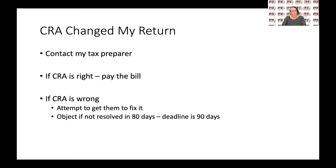If, however, you did your own return, then you have to figure out if CRA is correct in the changes they've made. Perhaps they found a T-slip — like a T4, a T5, or a T3 — that you failed to put on your return or that you didn't receive. CRA now has it because the person who issued it has also issued it to CRA.